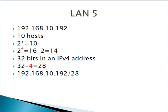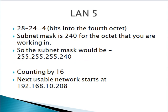So the notation is 192.168.10.192/28. Being 4 bits in gives us a subnet mask of 240 in that octet — 255.255.255.240. We'll be counting by 16 since we're 4 bits in, so our next network will start at .208.